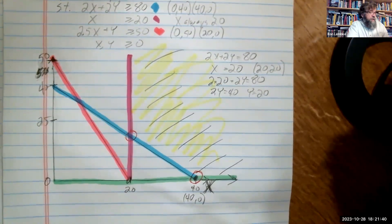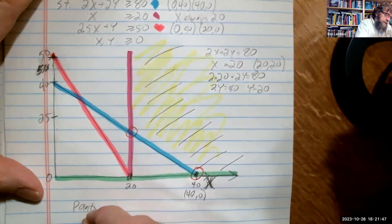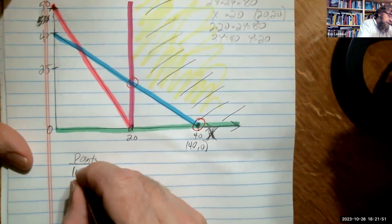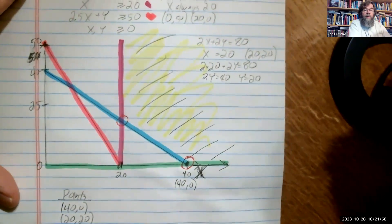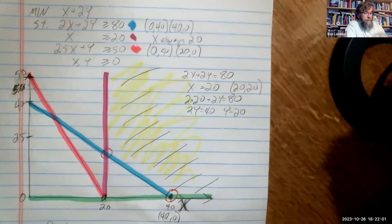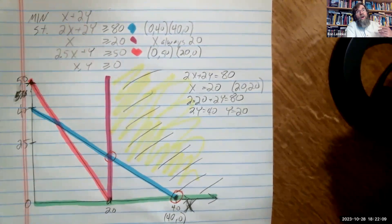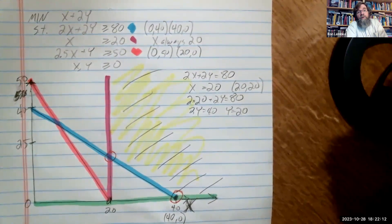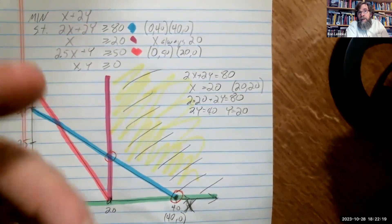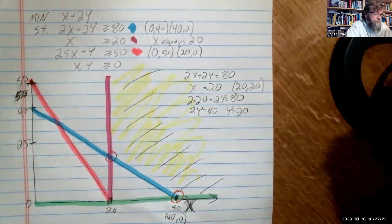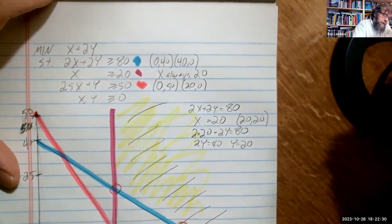And then the last thing is to figure out how much profit we would make at those two points. So let's make a little list here. The points we're going to look at will be 40, 0 and 20, 20. Now, before we evaluate the objective function at these points, let's just stop and look a minute at our objective function x plus 2y. So y is twice as expensive as x. And we are trying to minimize our costs here. So because y is twice as expensive as x, I'm thinking we probably will end up with an answer here where we don't have a lot of y.